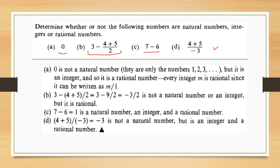For part A, zero is not a natural number because natural numbers are 1, 2, 3, and so on — the natural numbers start from 1. However, zero is an integer, and since it can be written in the form m/n, it is also a rational number. So zero is not a natural number; it is an integer and a rational number.